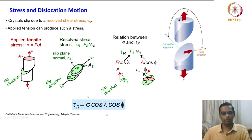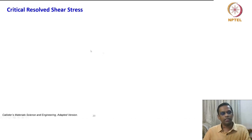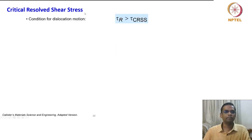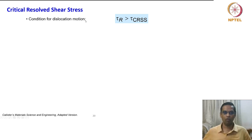This is a fundamental requirement for slip to take place. It is not the case that any resolved shear stress will cause slip — there is something called the critical resolved shear stress, which is the condition for dislocation motion. If you recall the Peierls-Nabarro equation, it is something similar.